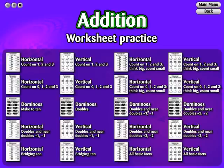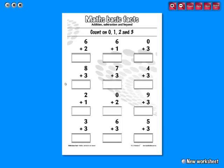A horizontal, vertical, or material-based worksheet is available for all strategies. Some worksheets, such as Make 10, will use materials such as dominoes. Worksheets are randomly generated and give you the option to create new ones with a click of a button.